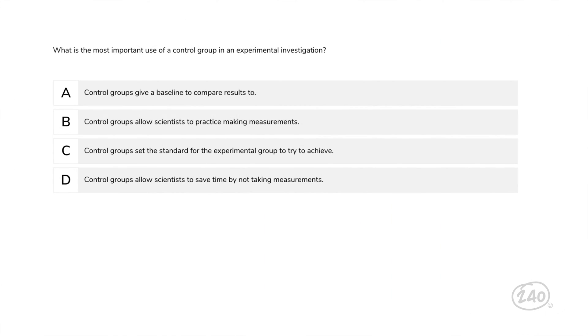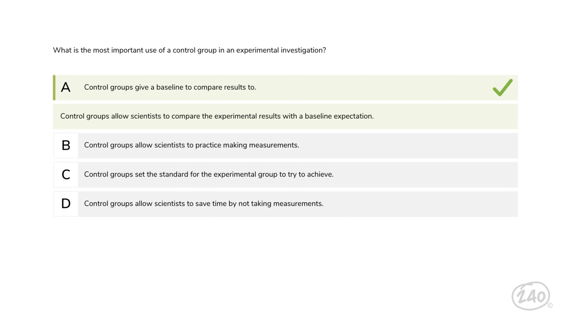And that's it for the domains. Now let's go over six practice questions similar to those you might see on the test. Starting with Domain 1, Scientific Inquiry and Processes: what is the most important use of a control group in an experimental investigation? Control groups allow scientists to compare the experimental results with a baseline expectation, so the answer must be A.